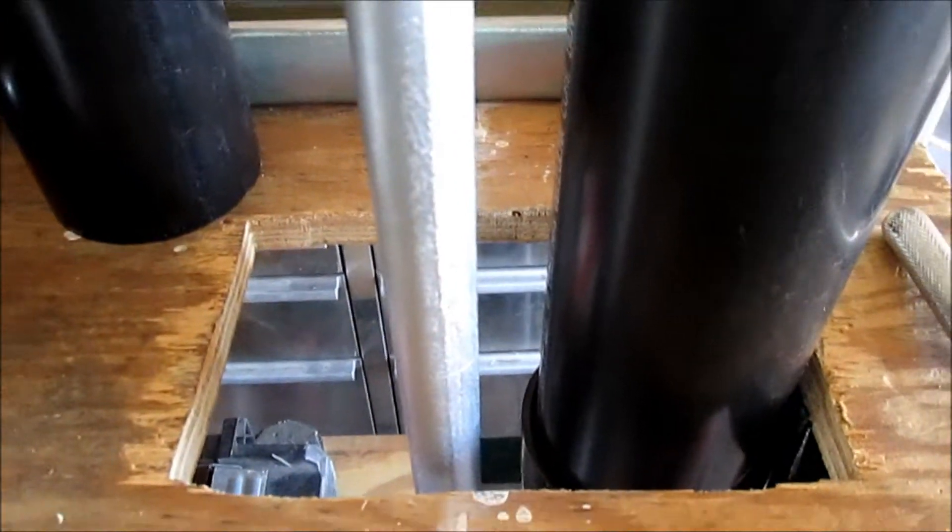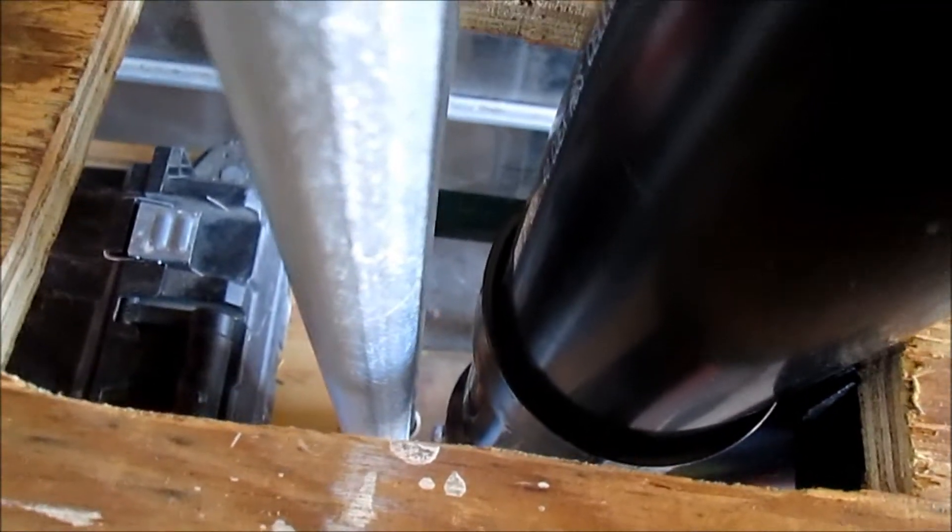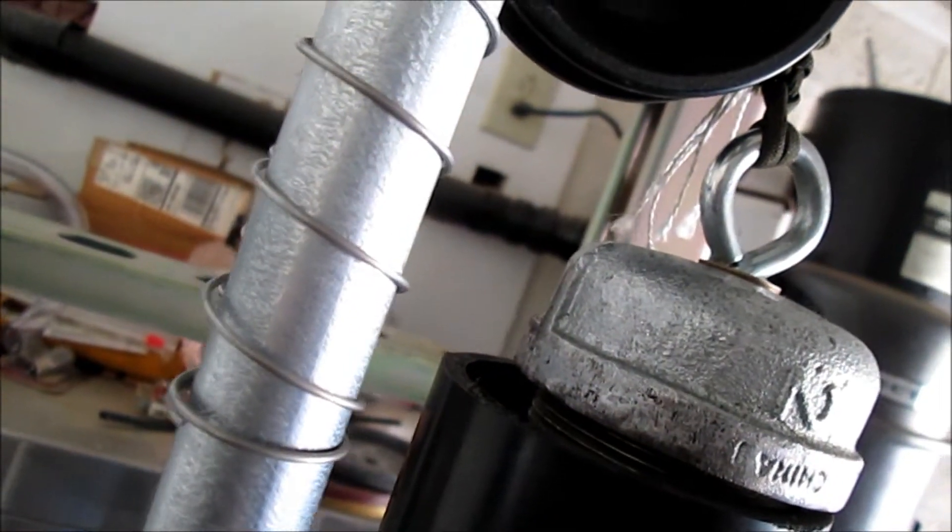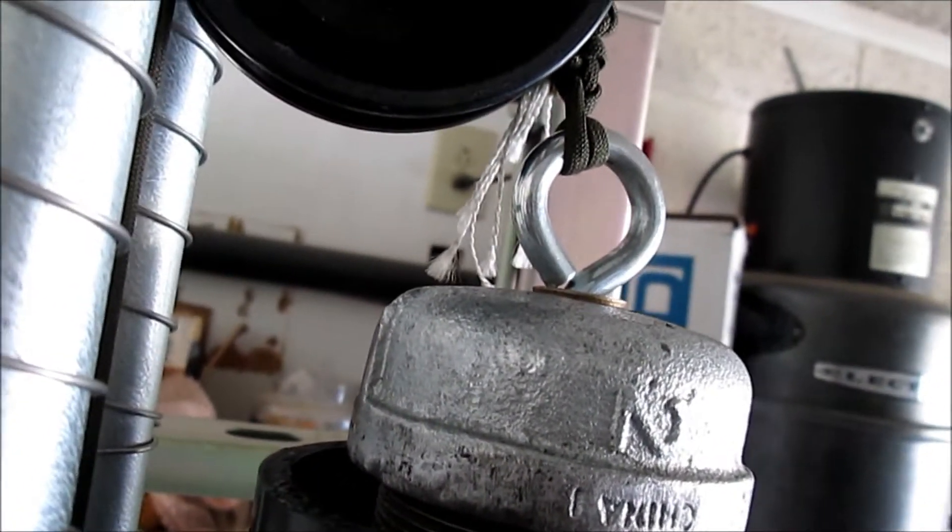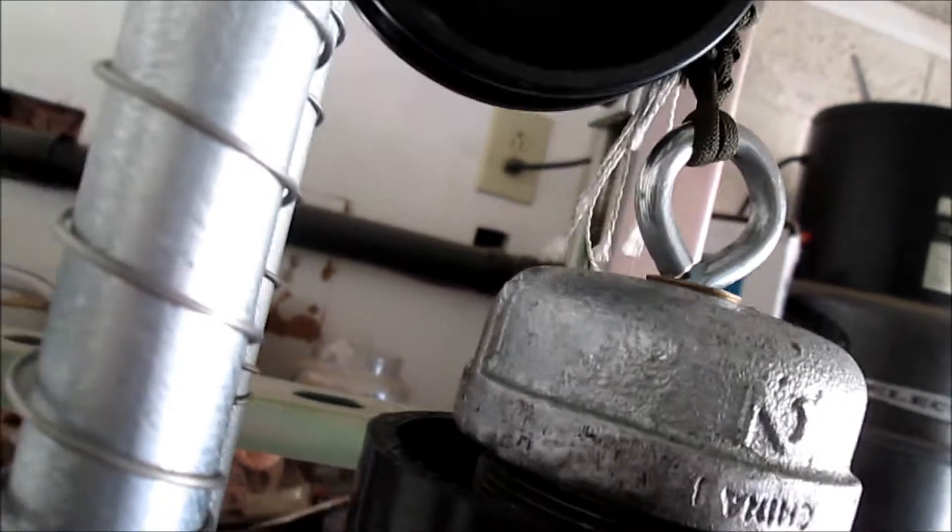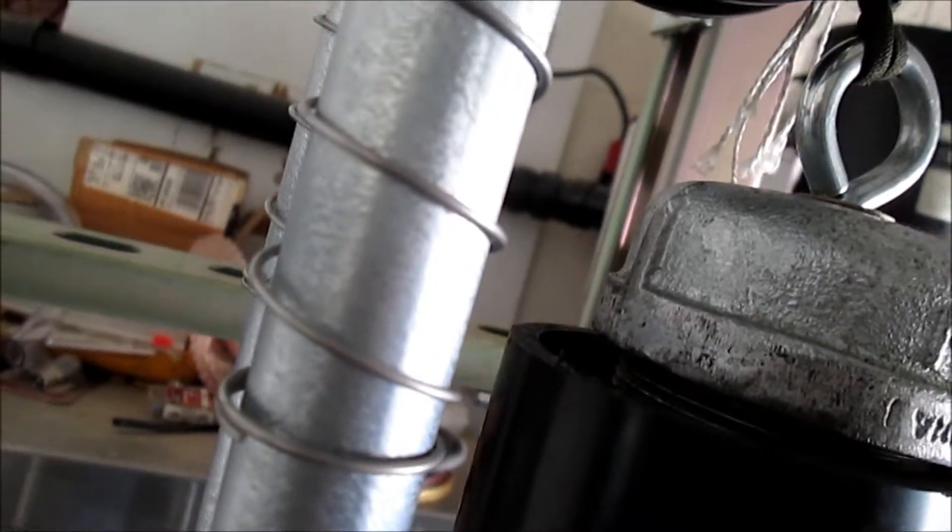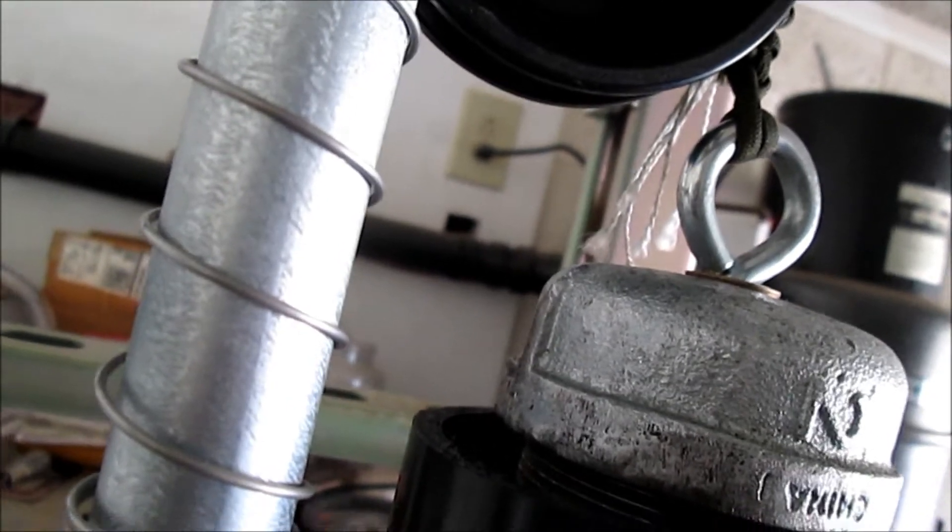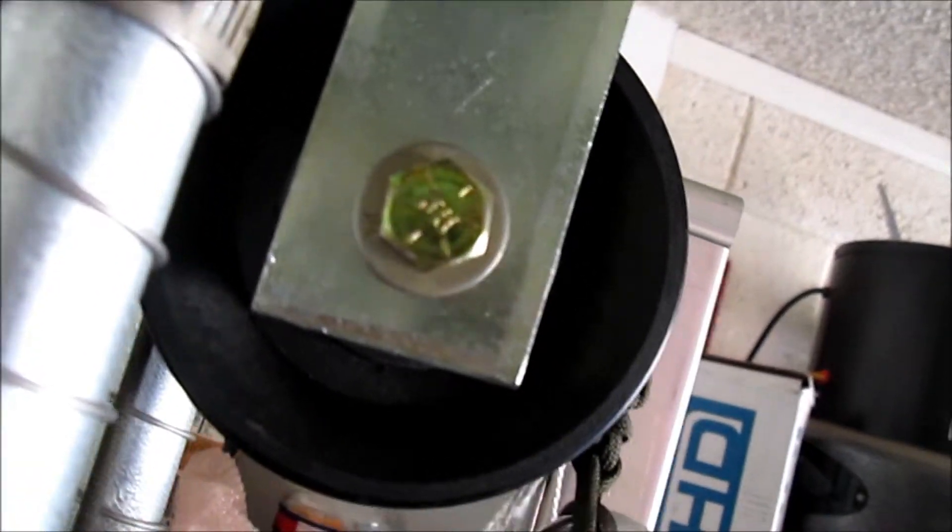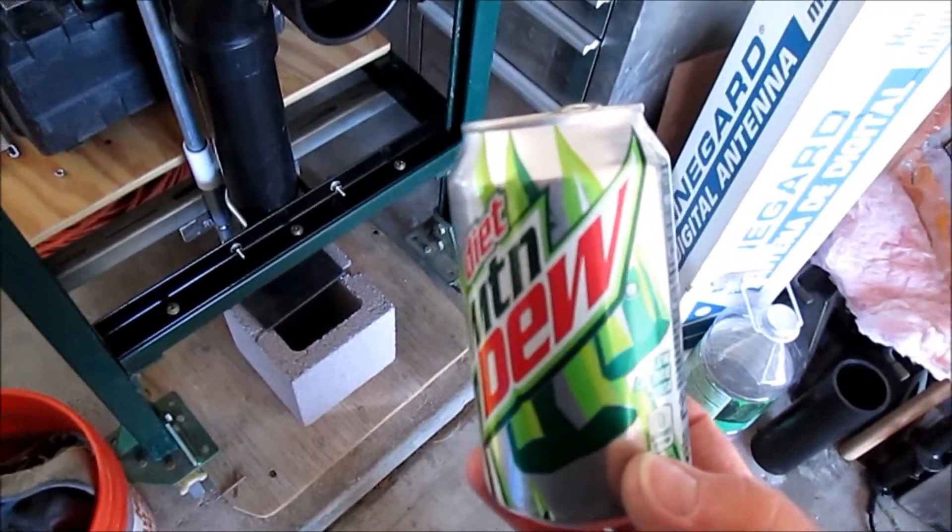There you see the top of the, shall we call it, the crushing device. Here's some damping springs because when the weight goes down, the little slider comes up real quick. Here's a nice three-inch pulley. Now here's a selected can to make shorter.